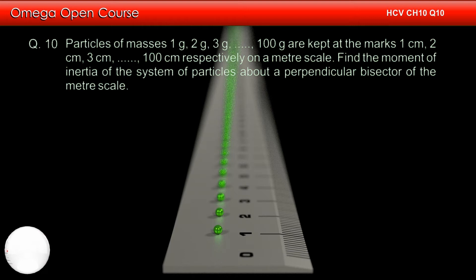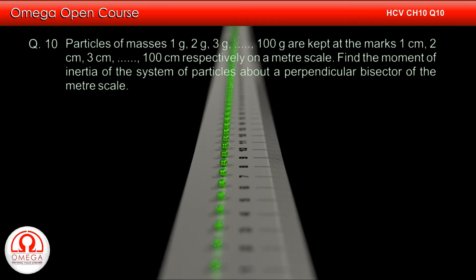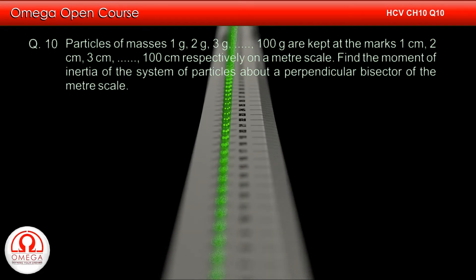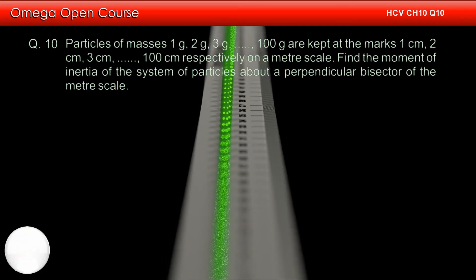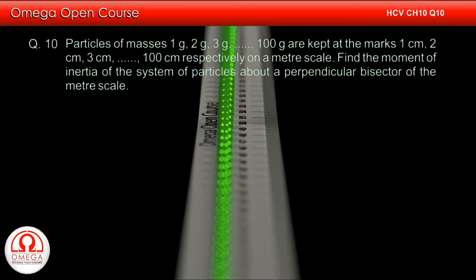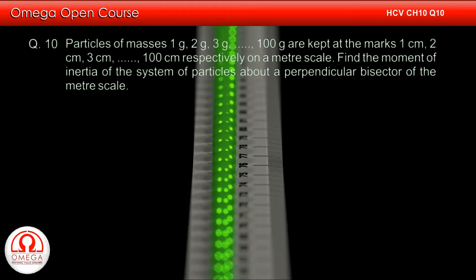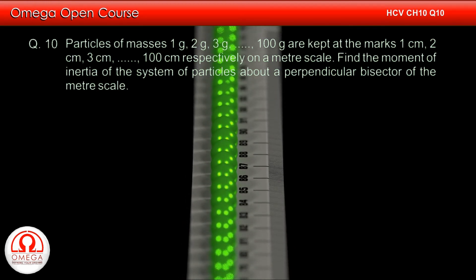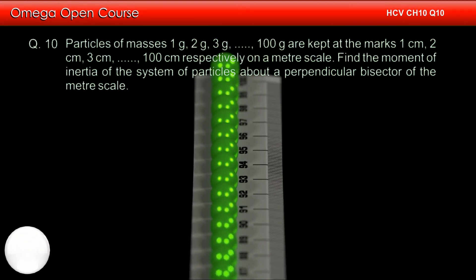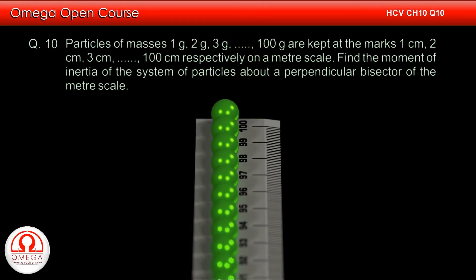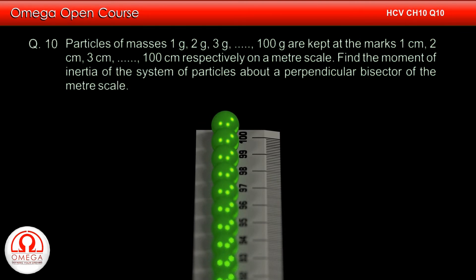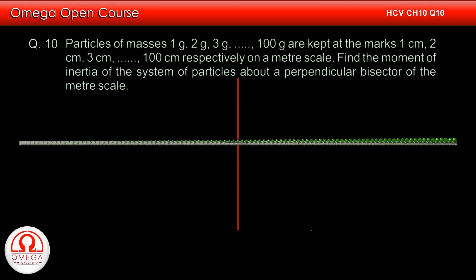Particles of masses 1g, 2g, 3g, up to 100g are kept at the marks 1cm, 2cm, 3cm, up to 100cm respectively on a meter scale. Find the moment of inertia of the system of particles about a perpendicular bisector of the meter scale.